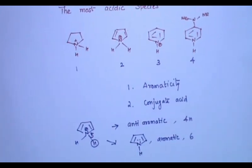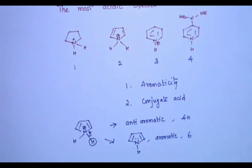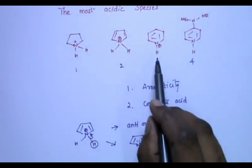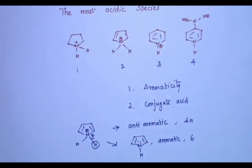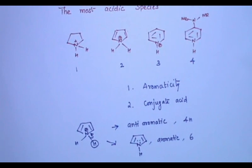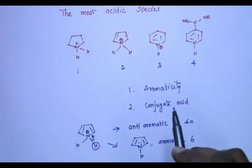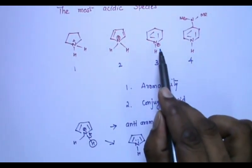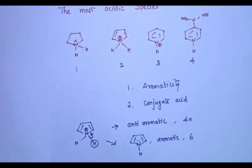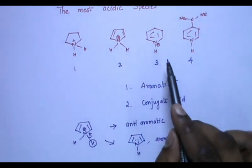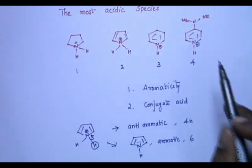What about the third and fourth? In the pyridinium ion, the lone pair doesn't involve in delocalization. That lone pair is present in the orbital which is perpendicular to the pi orbital. So when we go for electron count, we are not considering the lone pair present on the nitrogen. Because of that, even the pyridinium ion is aromatic — it is not anti-aromatic. Because of that, compared to the second compound, this pyridinium ion will be less acidic. For the same reason, the fourth compound will also be less acidic.